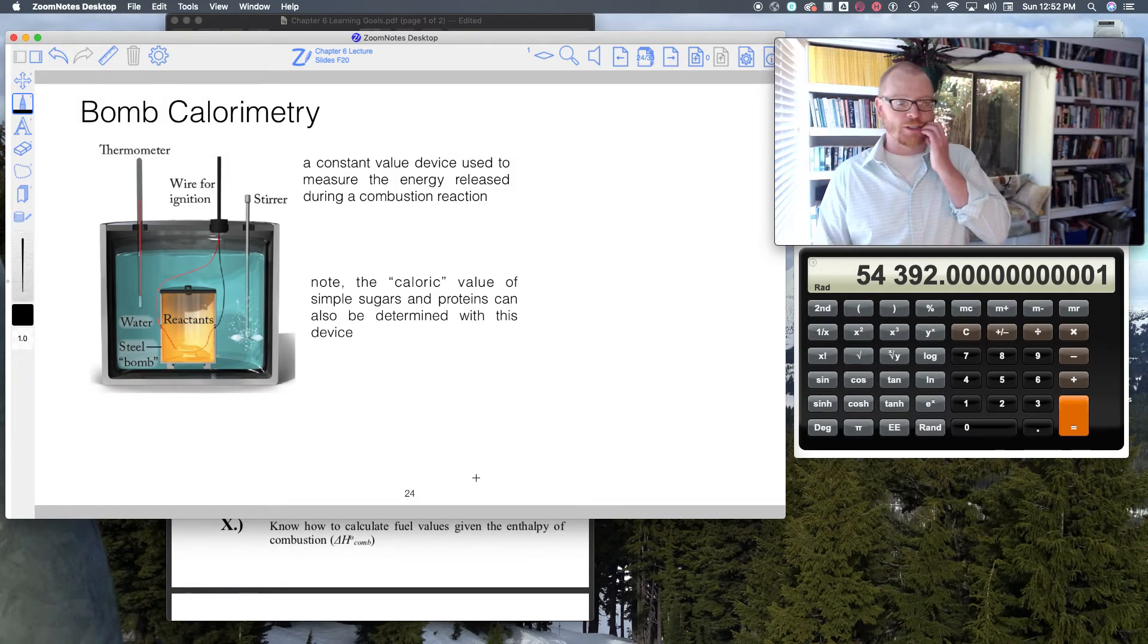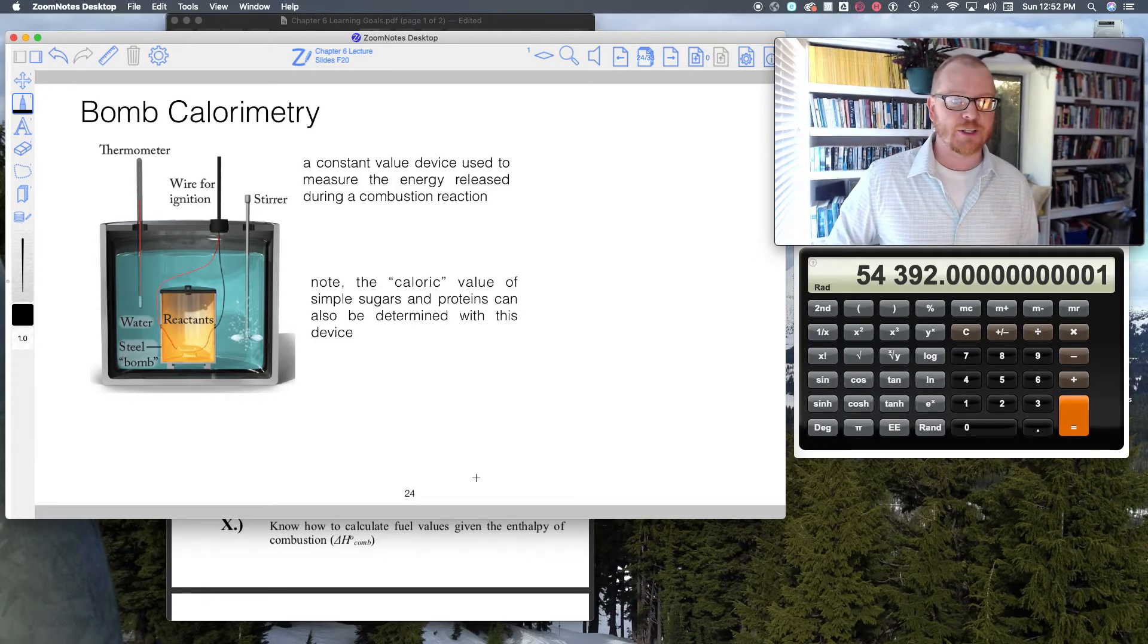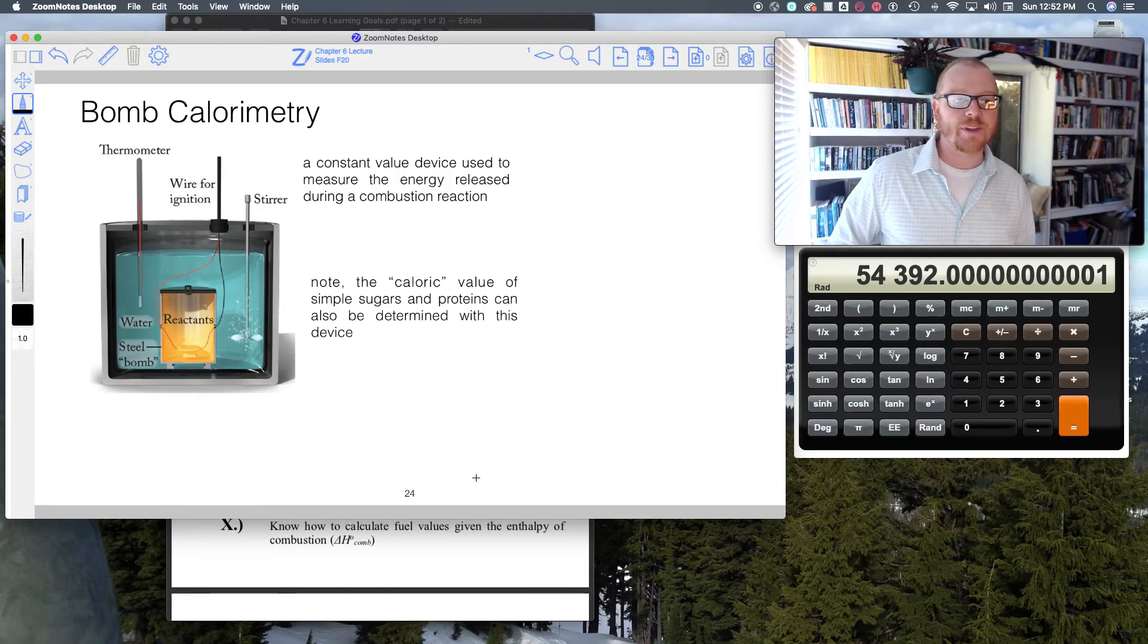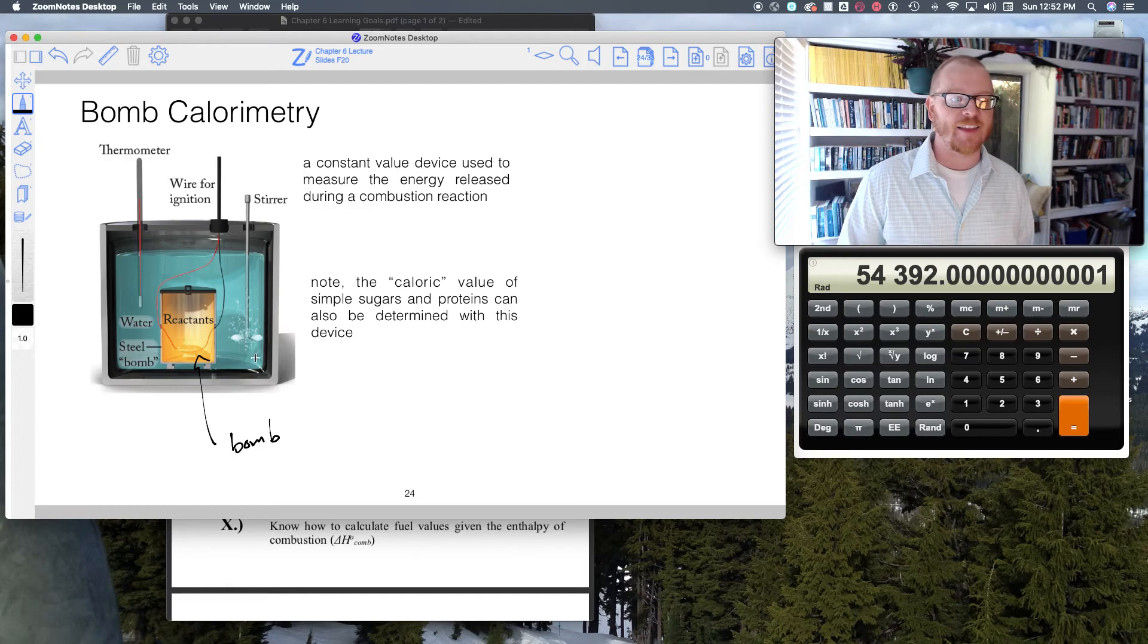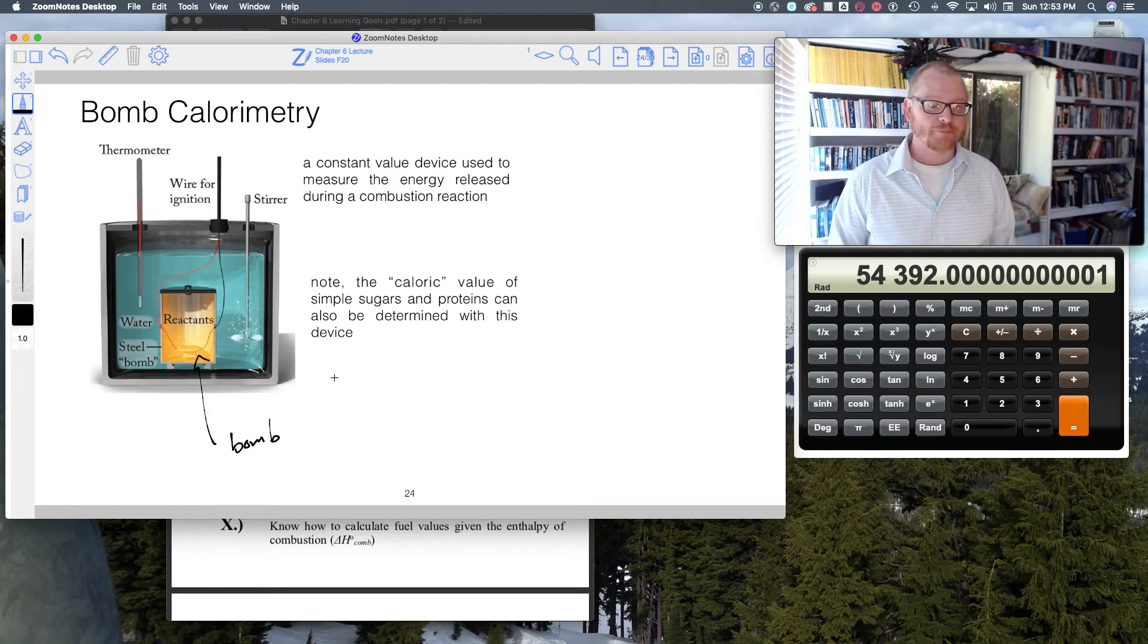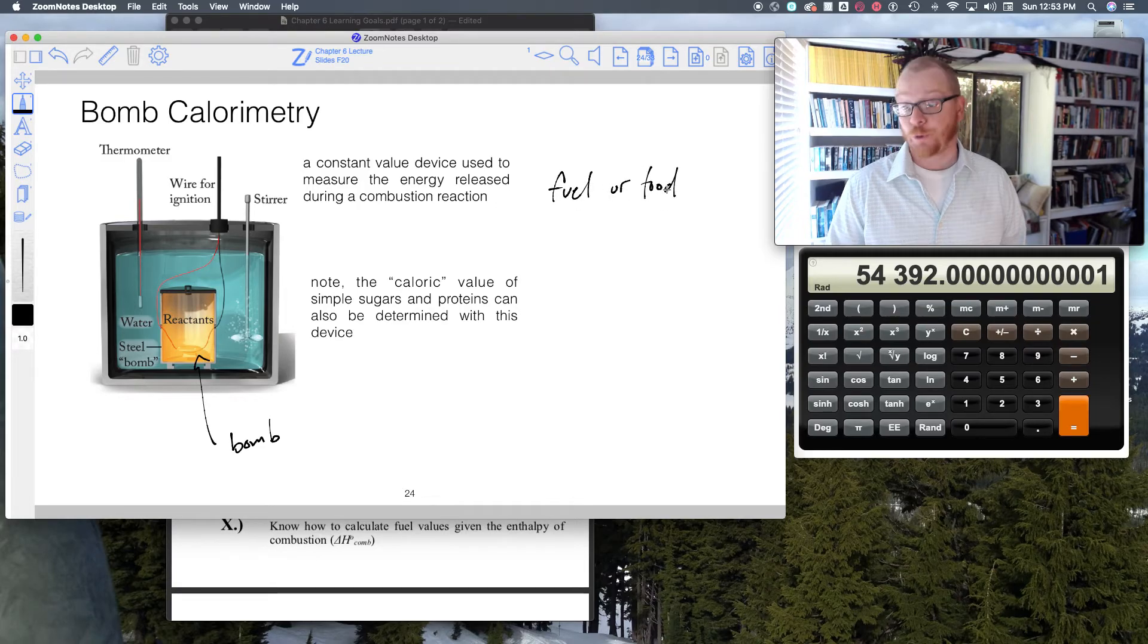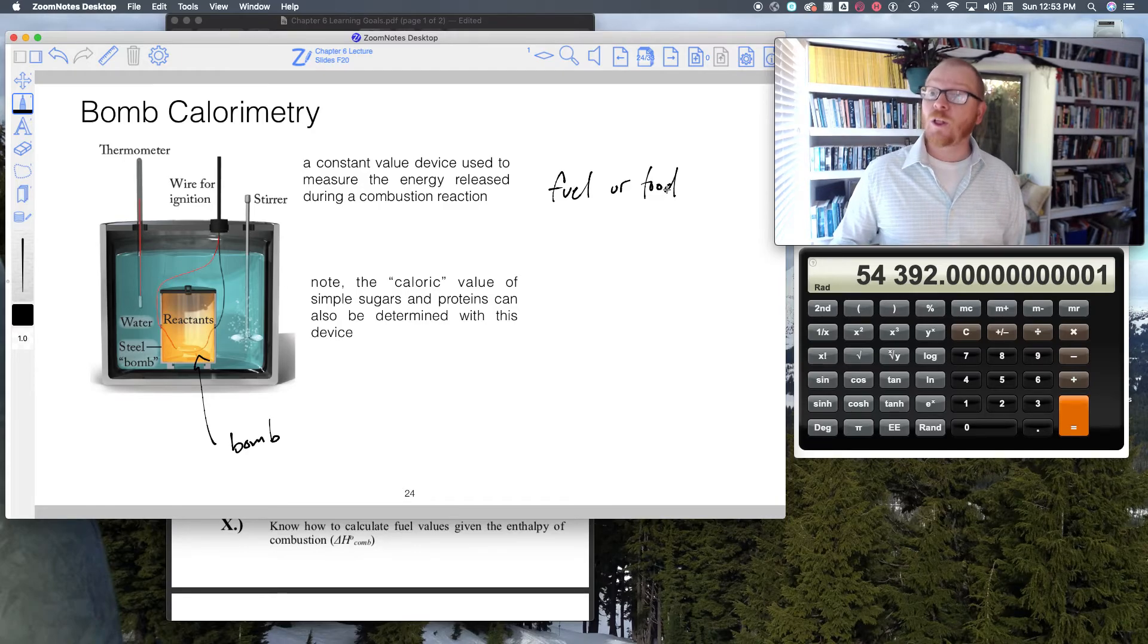What does a professional calorimeter look like? This is a bomb calorimeter. I actually have one of these in my laboratory that senior students get to use. It's pretty cool. What you do in these bomb calorimeters, it actually is a bomb. It's a stainless steel bomb. You put your reactants in there and you wire up these ignition wires. You fill this whole thing with tons of oxygen, oxygen gas.